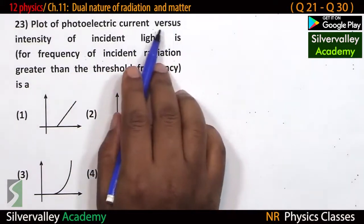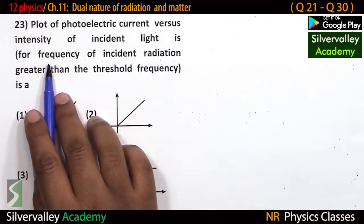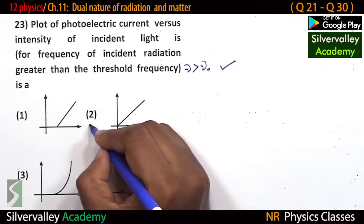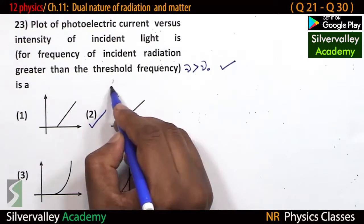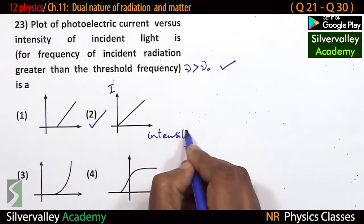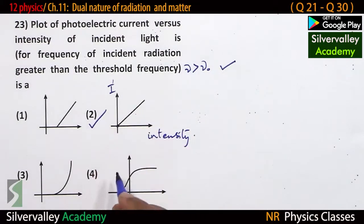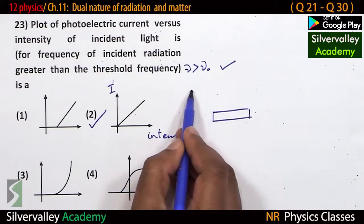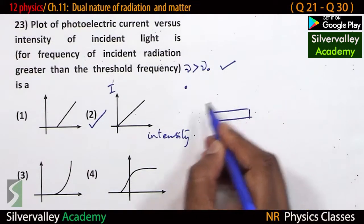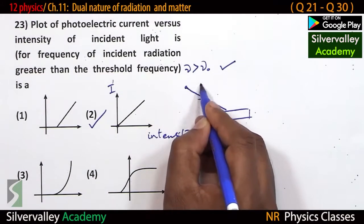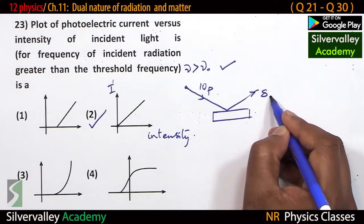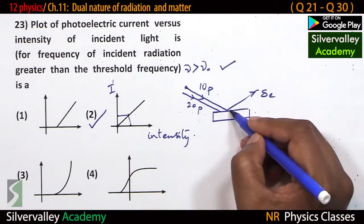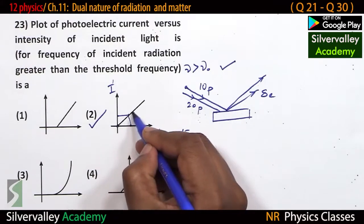Plot of photoelectric current versus intensity of incident light: for frequency of incident radiation greater than threshold frequency, there is emission. The graph of photoelectric current versus intensity is a straight line passing through the origin. When intensity is zero, current is also zero — meaning zero photons are falling, so there is no emission of electrons. As number of photons increases, the number of electrons also increases linearly.